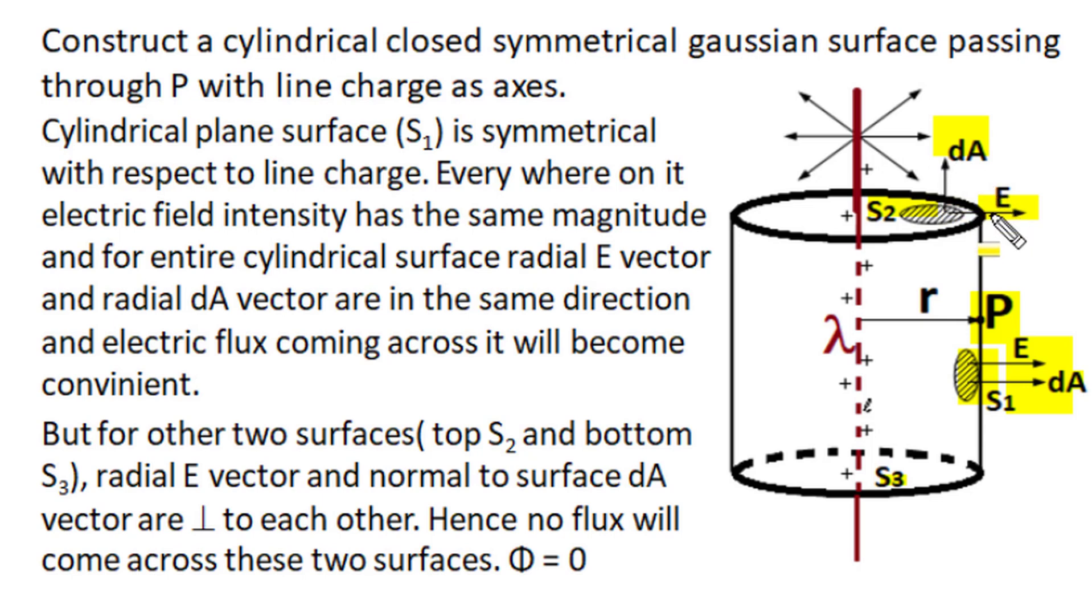the two are perpendicular to each other and the dot product for flux calculation across top and bottom results as zero value as cos 90 is zero. So there won't be any flux across top surface or bottom surface and flux is only across cylindrical part of this Gaussian surface.